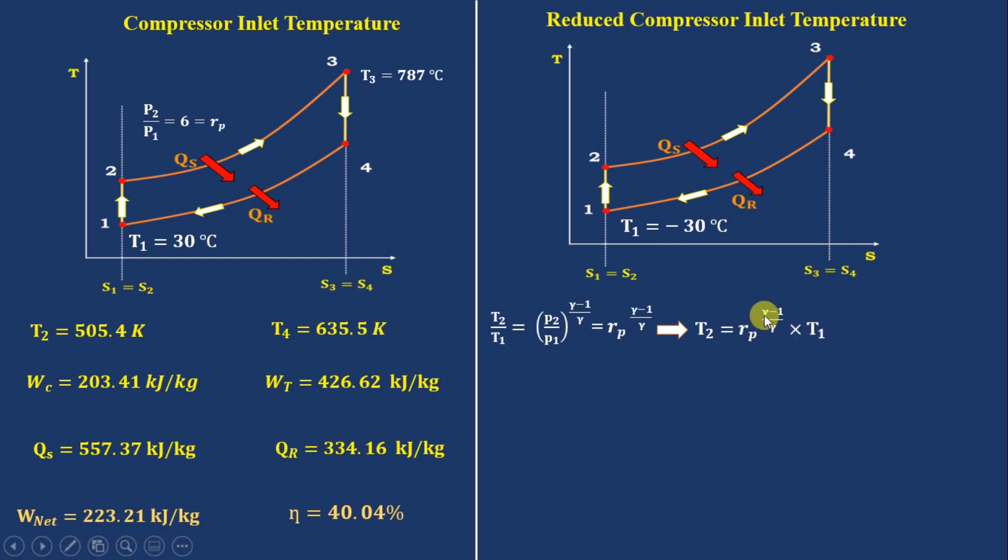Rp is 6, gamma is 1.4, T1 given in question is minus 30 degrees Celsius. So converted to Kelvin that becomes 243. So T2 becomes 405.44 Kelvin.